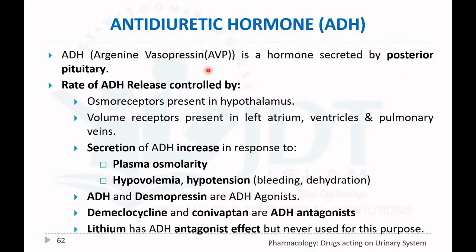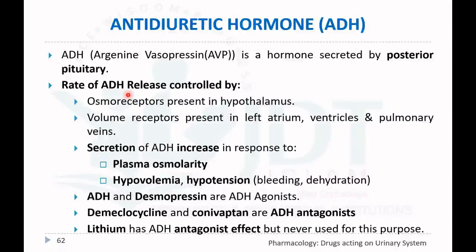Anti-diuretic hormone is also known as arginine vasopressin. It is a hormone secreted by the posterior pituitary. Now, what are the different factors that affect the rate of ADH release?